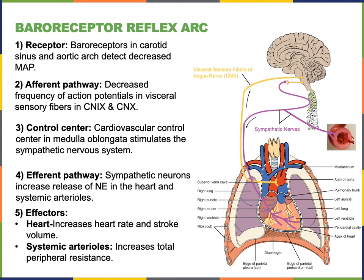The decreased frequency of action potentials in these afferent fibers is relaying the information into the control center in the medulla oblongata. The medulla oblongata then stimulates the sympathetic nervous system as an efferent pathway. The sympathetic nervous system will stimulate the heart and stimulate the arterioles — the effector organs — in order to produce a response increasing the mean arterial pressure to restore the homeostatic set point.